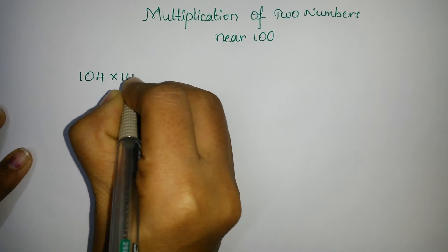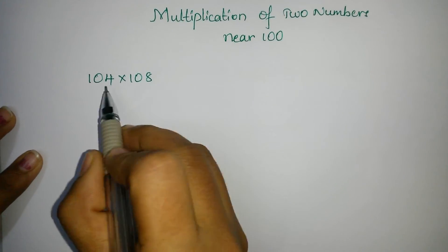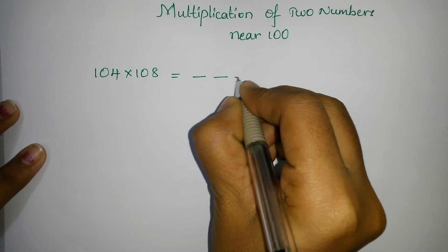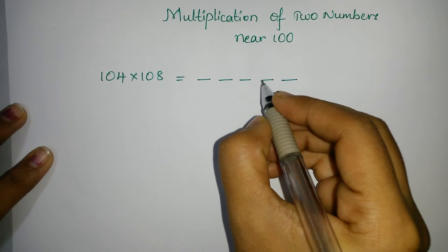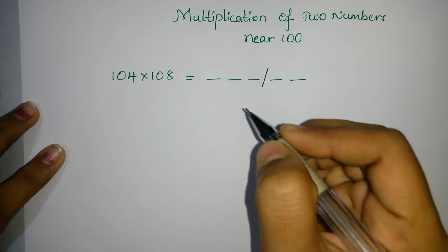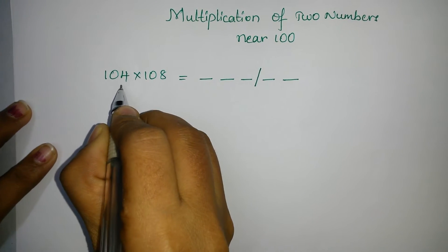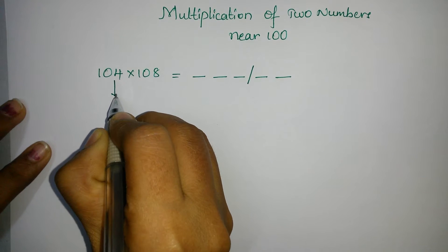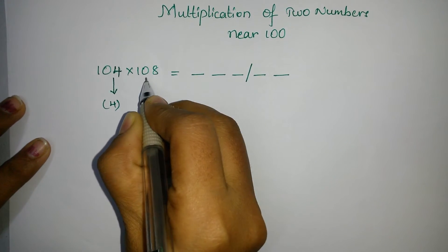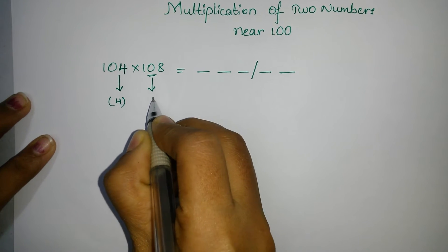See, 104 into 108. Here when you multiply these two numbers, you will get a 5 digit answer. That 5 digit answer you have to separate into two parts. One is left part and one is right part. See in this 104, we have extra 4 and in this 108, we have extra 8.